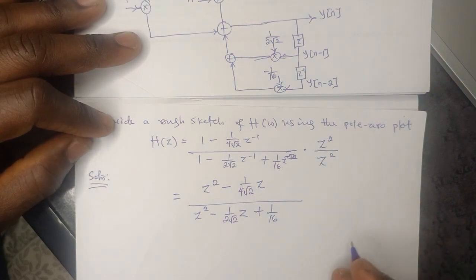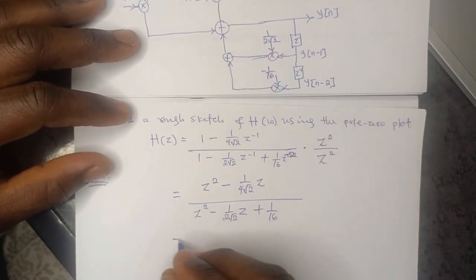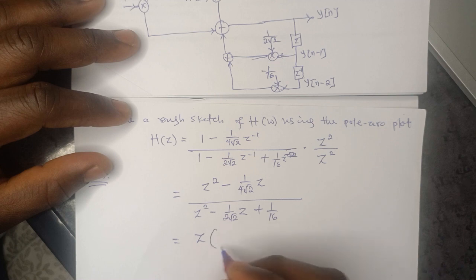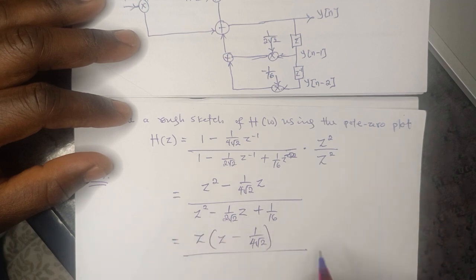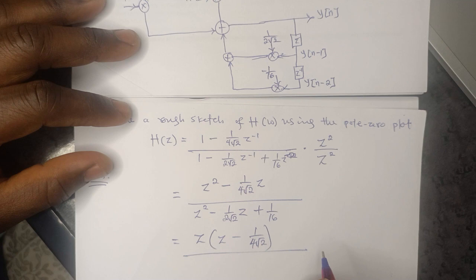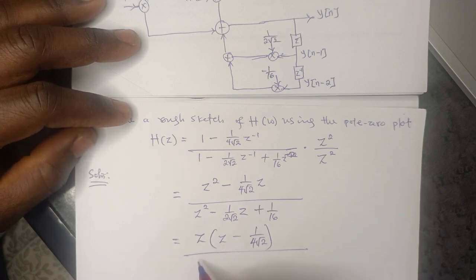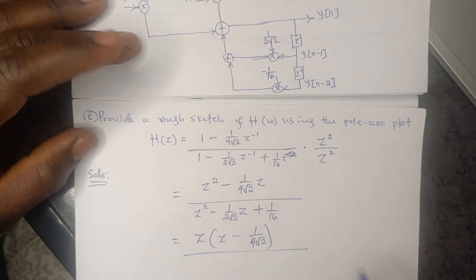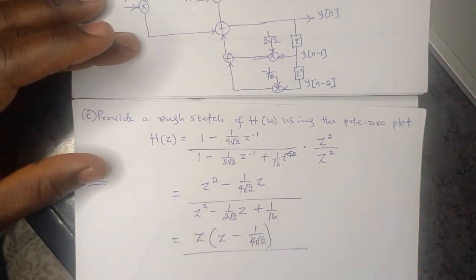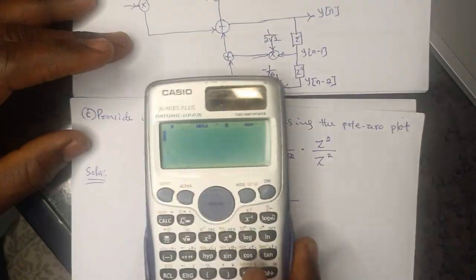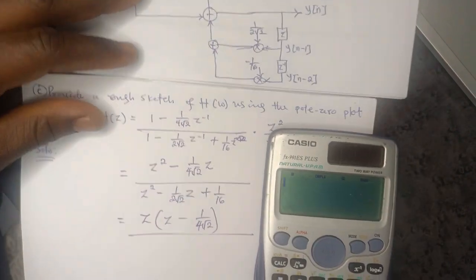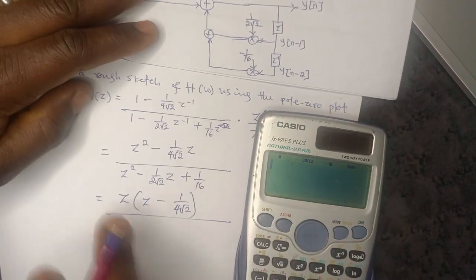From here we can factorize. The numerator becomes Z minus 1/(4√2). For the denominator, we need to expand this quadratic expression, and we can use the calculator to find the roots of this expression.